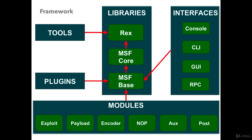This is the Metasploit framework. The main part is the libraries, which is called the meat part or core part. In this we have Rex, MSF Core, and MSF Base. The supporting part consists of tools and plugins that support the libraries. To access the core part, we use the console, CLI, and GUI.